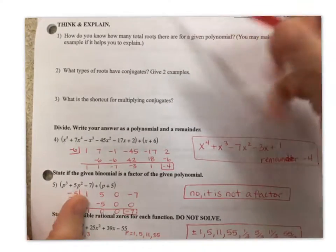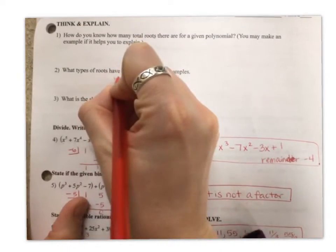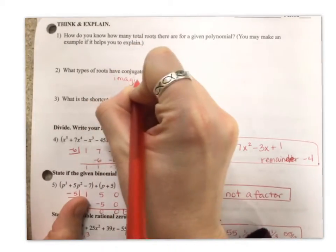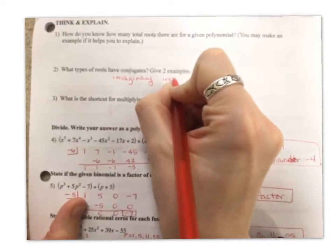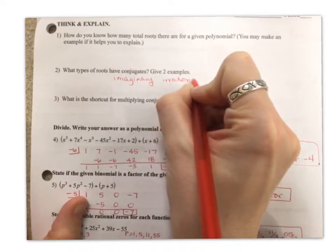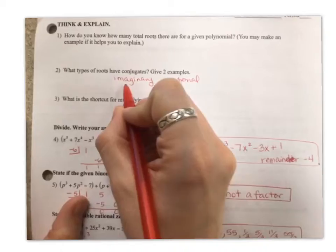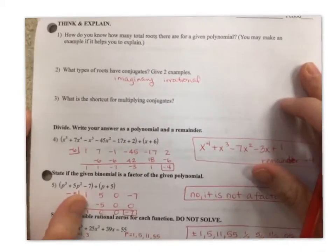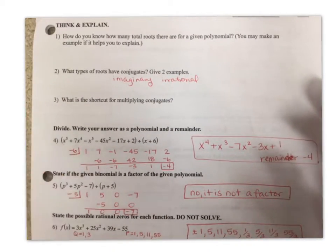Types of roots that have conjugates, that is going to be our imaginary roots and our irrational roots. So anything that has a square root still in it, or if it has i in it, those are going to come in conjugate pairs, which means you have to have the positive and the negative version.